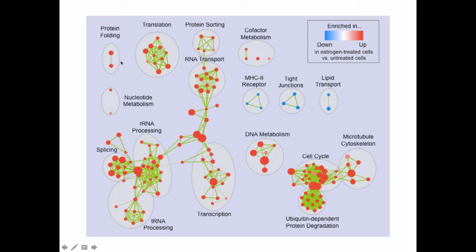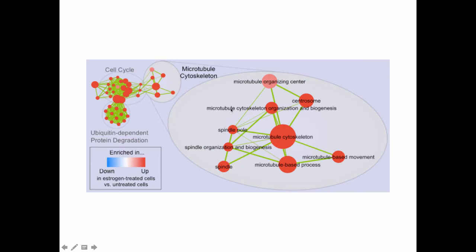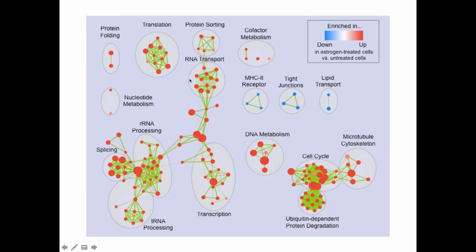All the nodes are pathways. You can see in the zoom, they have names like microtubule organizing center, microtubule cytoskeleton organization and biogenesis, centrosome. All of these are related, and we put them into a theme called microtubule cytoskeleton. You'll see very quickly there are major themes that come up.